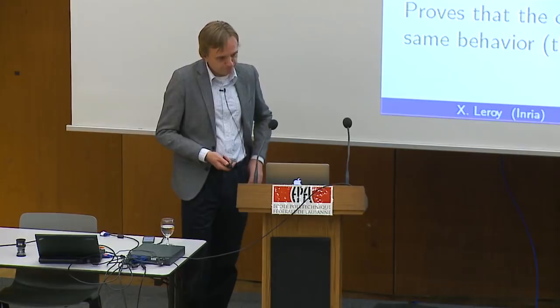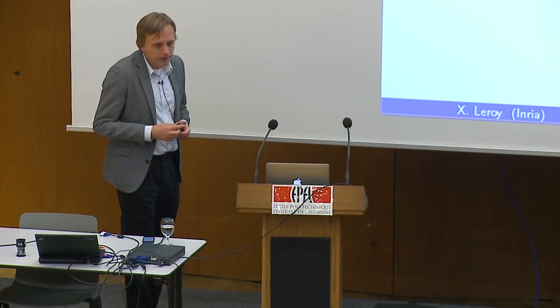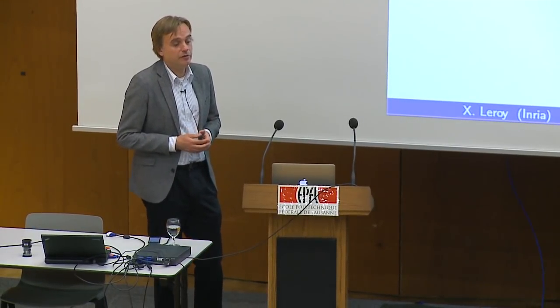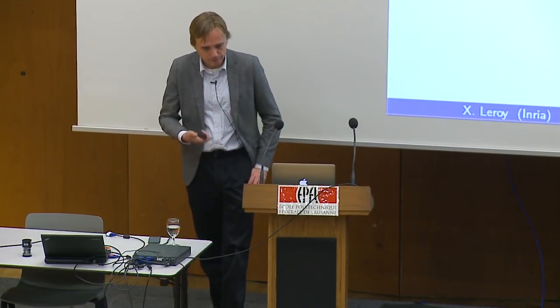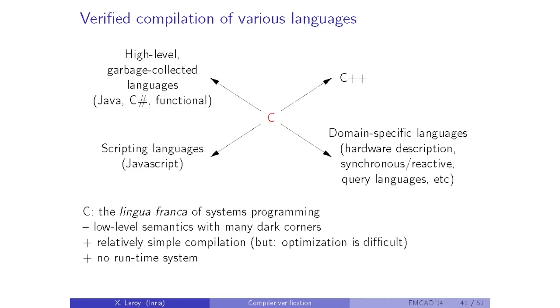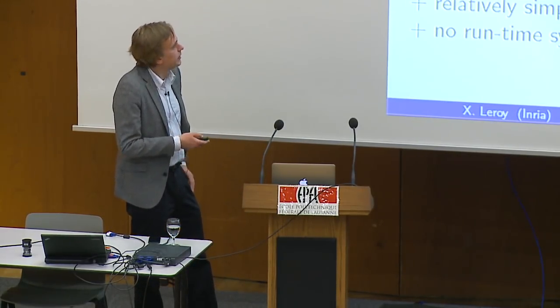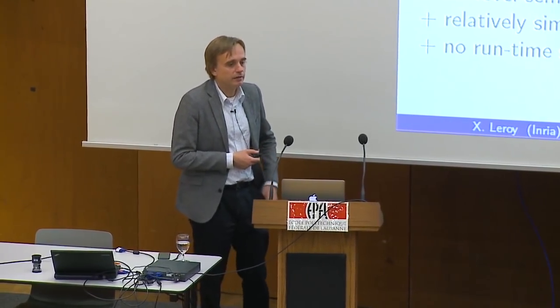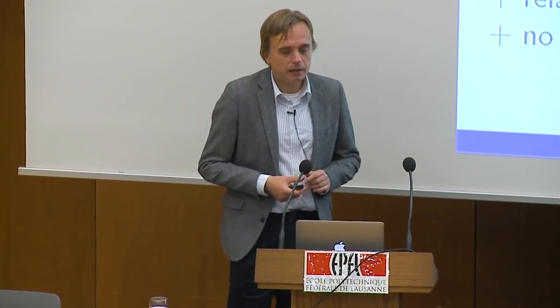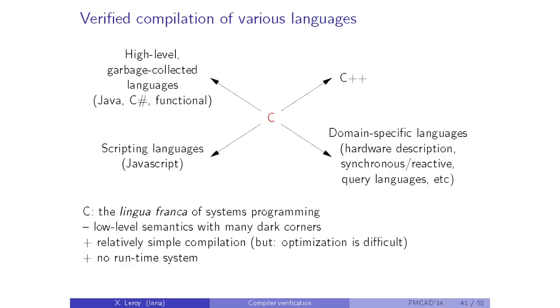Now for the last part of the talk: verified compilation of other source languages. Why C? It's the lingua franca for systems programming, so it was a good choice for usability. However, the semantics of C is absolutely awful — especially pointer arithmetic and dark corners that I keep discovering even after 25 years. Compilation of C is relatively simple since the language was designed for compilation, though optimization is difficult due to uncontrolled pointers. You don't need a runtime system, meaning fewer things to verify.